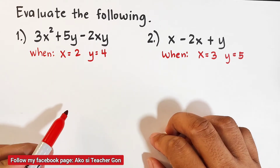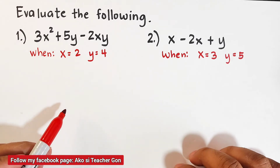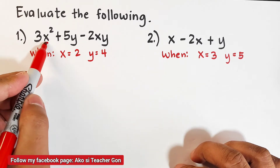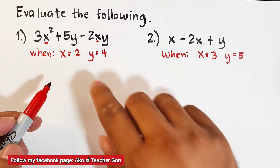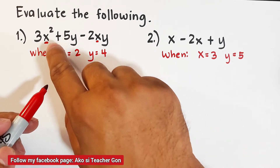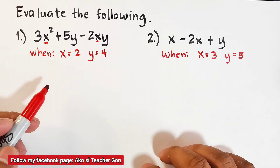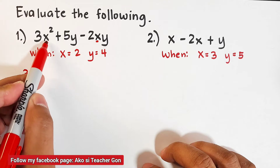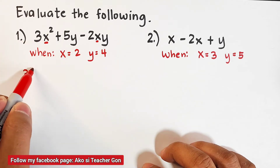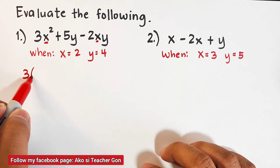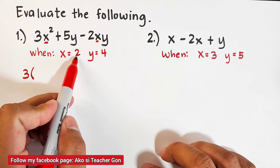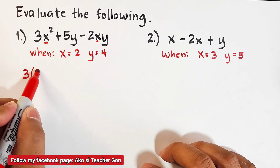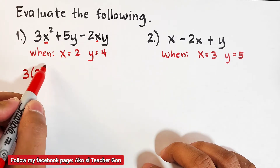We are given x is equal to 2 and y is equal to 4. As you can see in this expression, we have x, wherein we will plug in the number 2 for the variable x. So we have 3, and then for x squared, we put a parenthesis — replace x by 2, then squared.